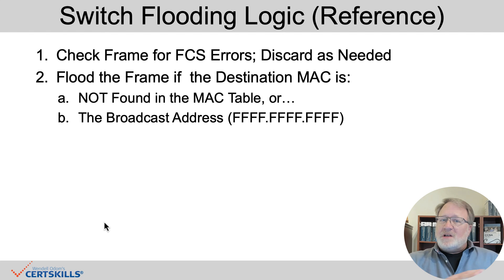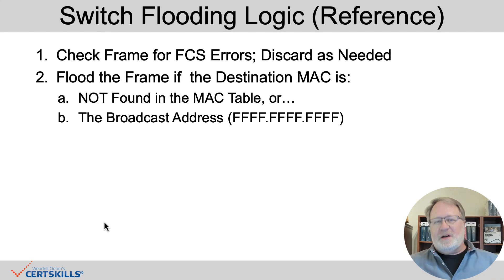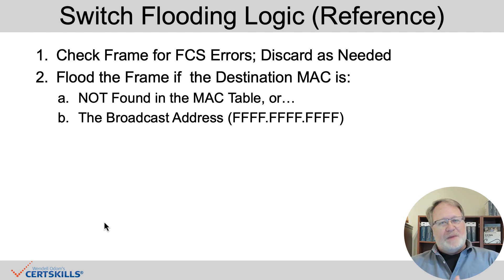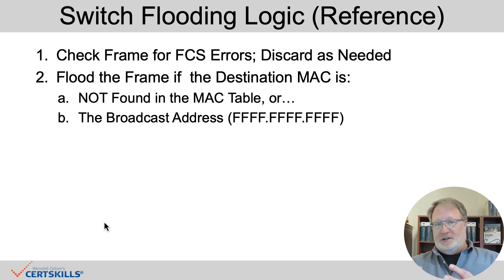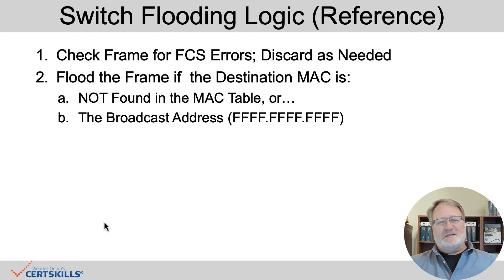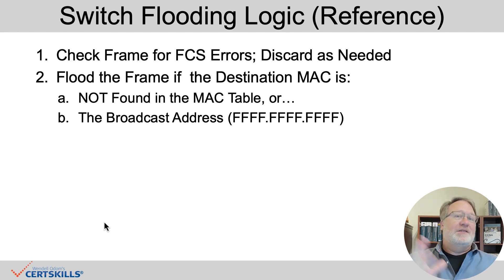To summarize: the switch itself checks the frame check sequence. If there are bit errors, it discards the frame. If not, it checks the destination MAC address. If the destination MAC address is not found in the switch's MAC address table, it floods the frame. Also, if the destination MAC address is the broadcast address — the one with all hex Fs — it always floods those. There is also a third class called multicast addresses; if no multicast optimizations are configured, those are flooded as well, though that's beyond CCNA scope.